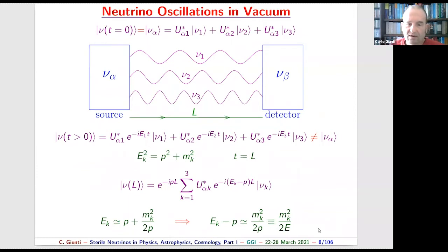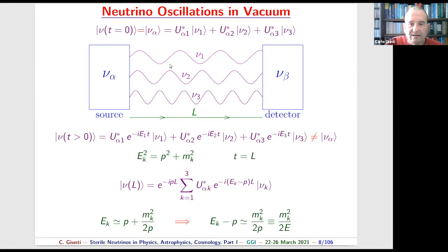Let us see how oscillations arise. Consider a neutrino source producing a neutrino with definite flavor alpha (e, mu, or tau) and a detector at distance L detecting flavor beta. At the beginning, due to neutrino mixing, the neutrino with definite flavor alpha is a precise linear combination of the three massive neutrinos nu1, nu2, and nu3.